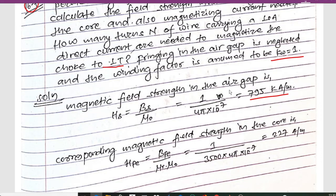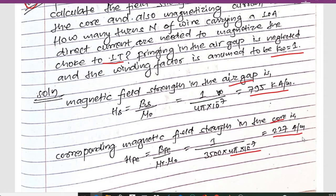The magnetic field strength in the core is calculated as H_fe = B_fe / (μ₀ · μr). With B_fe = 1 T, μ₀ = 4π × 10⁻⁷, and μr = 3500, we obtain H_fe = 227 amperes per meter.